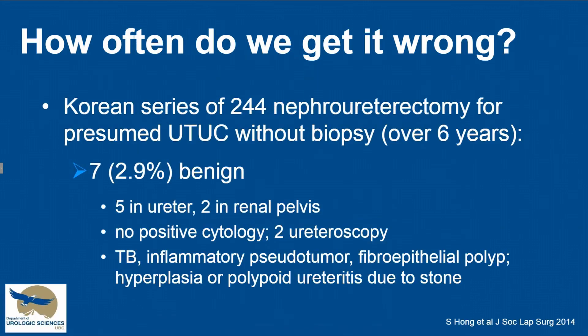One question not well answered in the literature is: how often do we get it wrong? How often, if we just go by CT scan and remove the kidney, will the histology be benign? One series from Korea found the rate to be approximately 3% out of 244 nephroureterectomies — interestingly, a disproportionate number were in the ureter. None of these patients had a positive cytology, which some would see as a minimum criterion for doing surgery, and the benign lesions were various relatively uncommon findings.